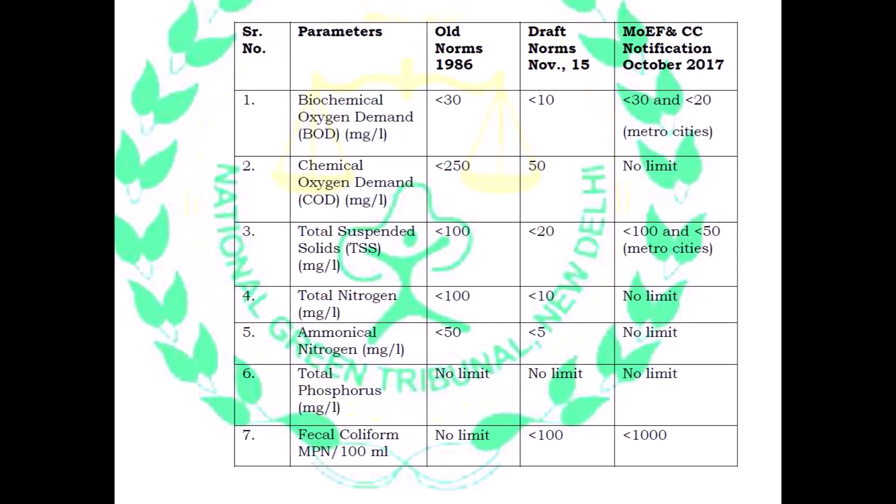In this visual, you can see seven parameters by which the performance of a sewage treatment plant is assessed: BOD, COD, total nitrogen and phosphorus, ammonical nitrogen, total suspended solids and fecal coliforms. As you can infer from the visual, the norms have become more stringent over a period of time. The emphasis on routine water quality checks and the imposition of strict fines on sewage treatment plants and municipal corporations is a routine occurrence in India these days.